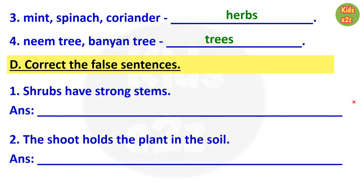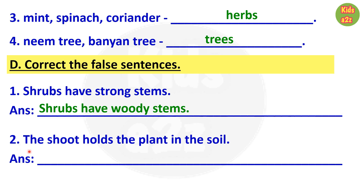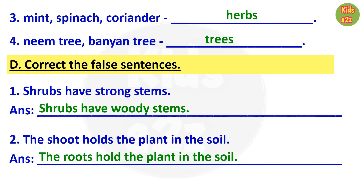Question D: correct the false sentences. False statements are given and kids need to correct them. First one: shrubs have strong stems — this is wrong. The correct answer is: shrubs have woody stems. Question 2: the shoot holds the plant in the soil — this is also wrong. The correct answer is: the roots hold the plant in the soil.